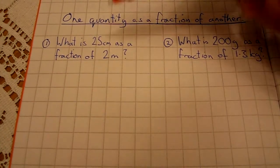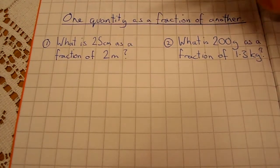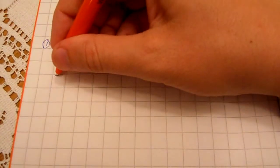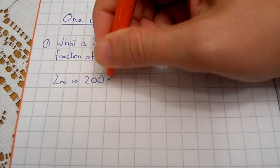So if we look at our two examples here, example one says what is 25 centimetres as a fraction of 2 metres? First things first is to say that 2 metres is 200 centimetres.